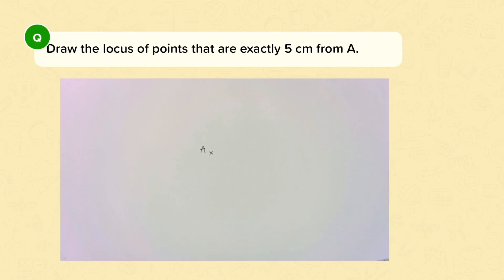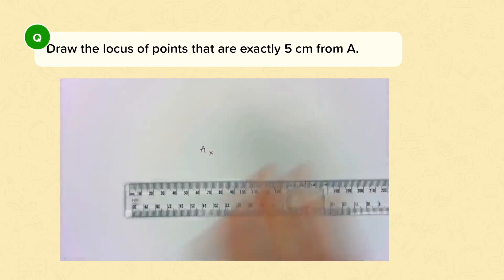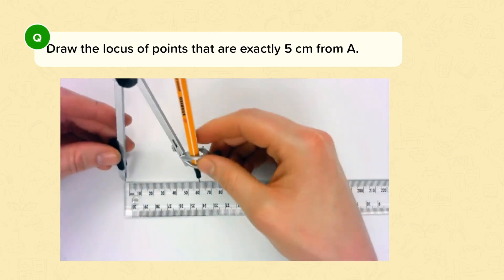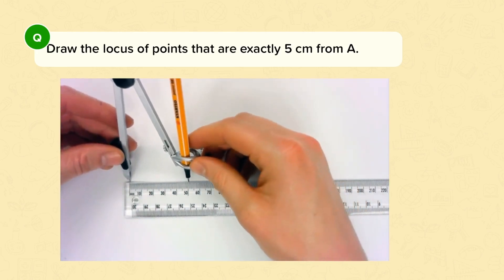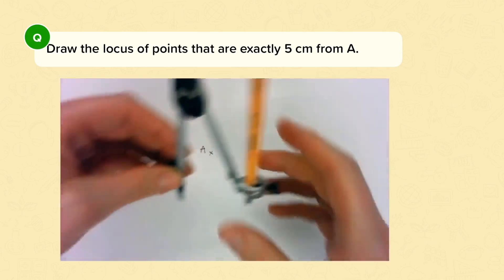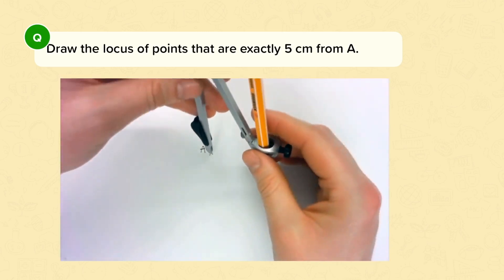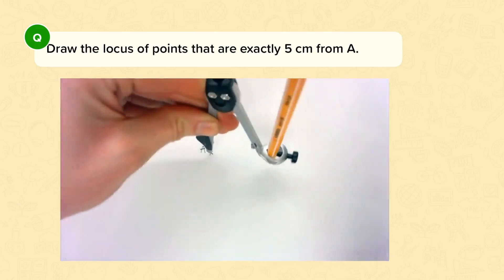Here I want to draw the locus of points that are exactly five centimetres from A. To do this, I will need to construct a circle with a radius of five centimetres. First I open my compasses to five centimetres, and put the point of my compass on the point A, and then rotate my pencil around the point like this.